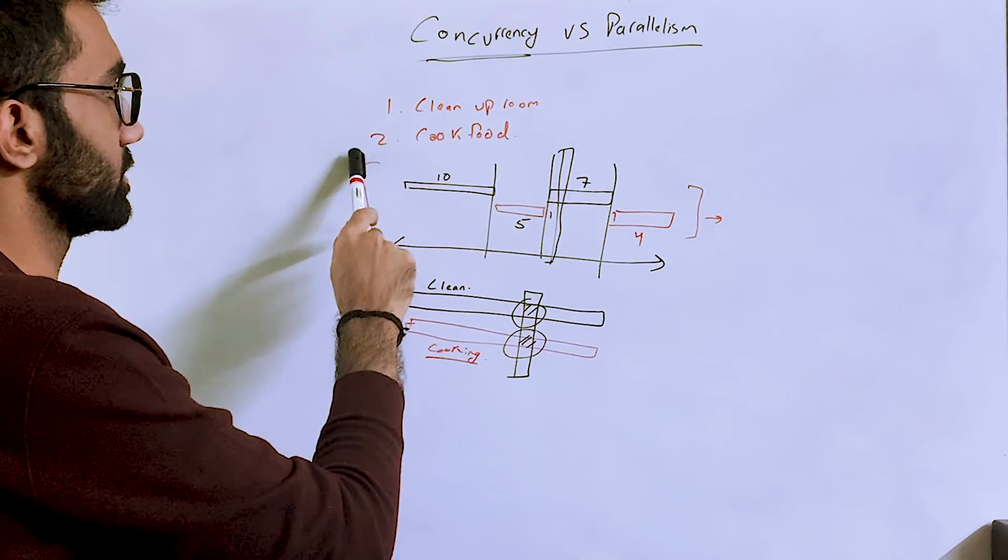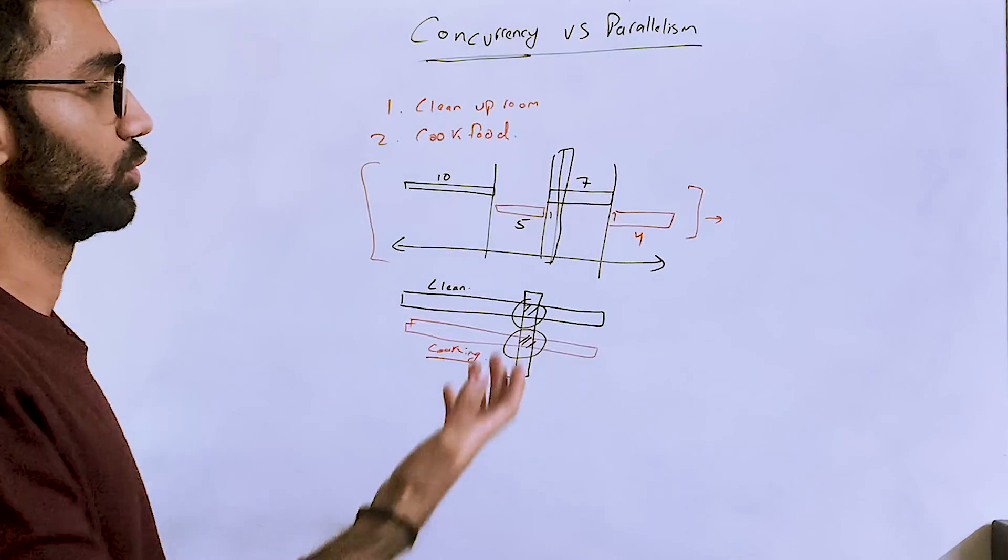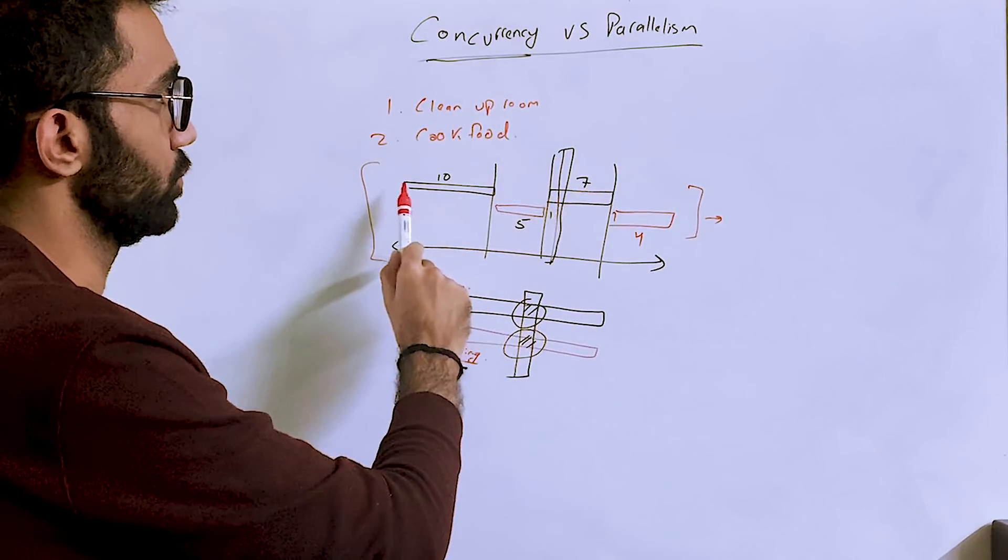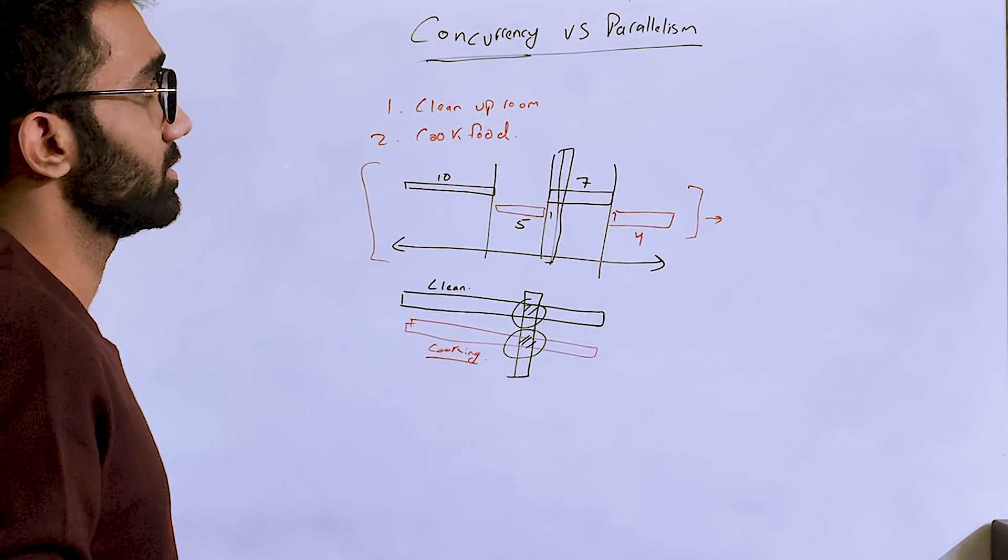Let's understand now: why do computers even bother doing this concurrent execution? Why not just do it in a sequential manner and be done with it? Take 17 minutes to clean up the room first, then take 9 minutes to cook.